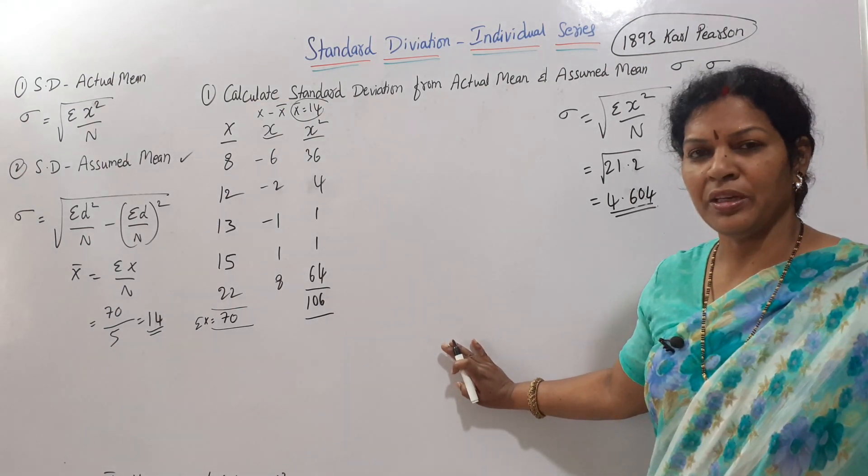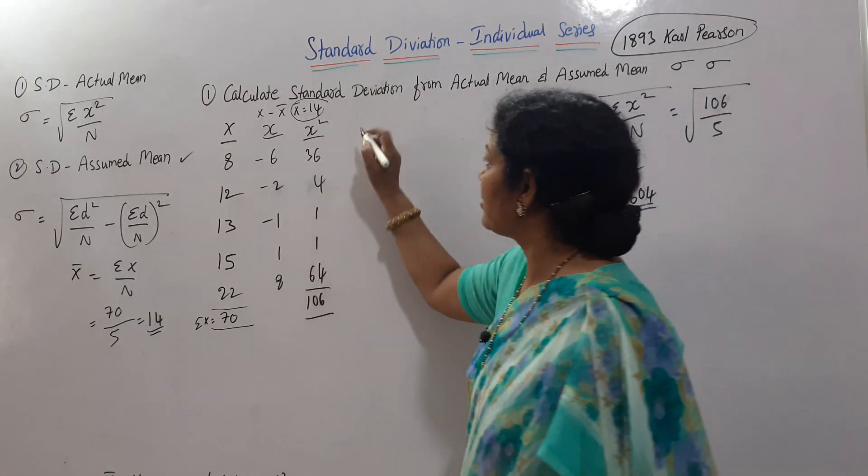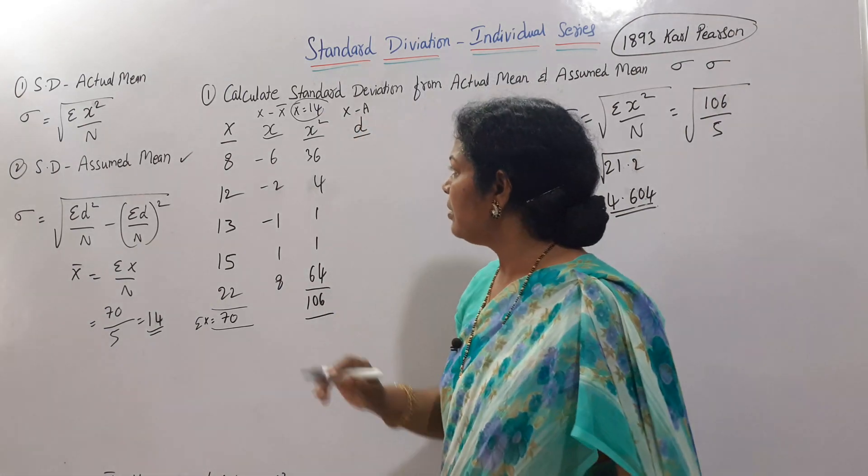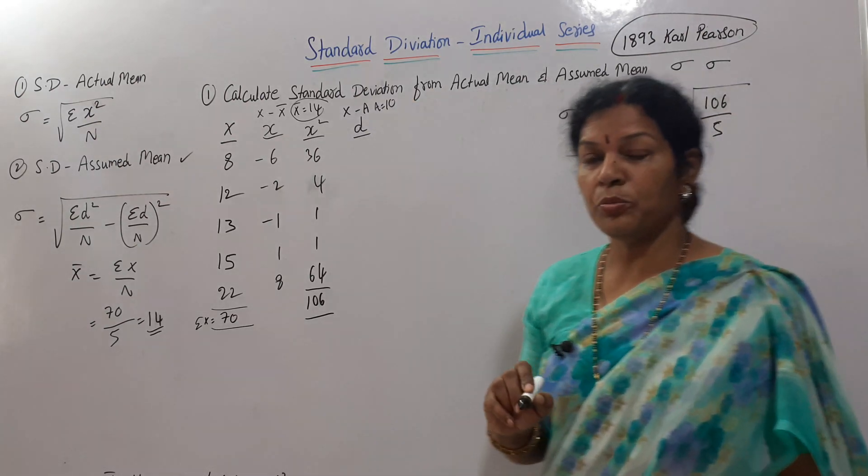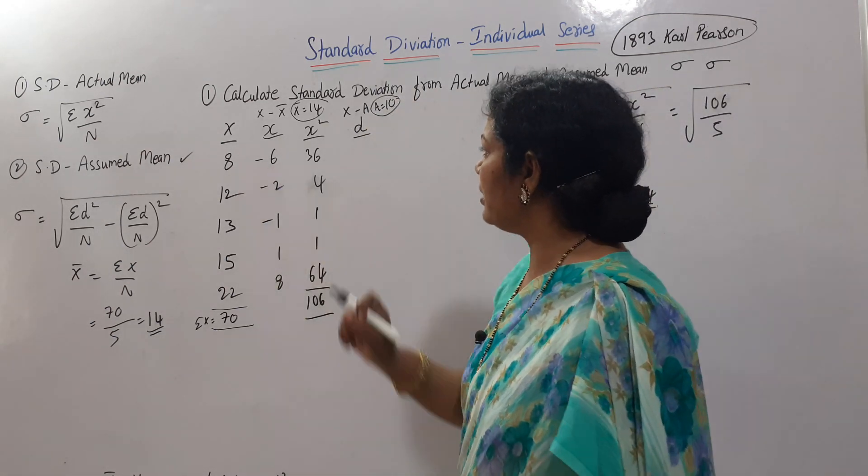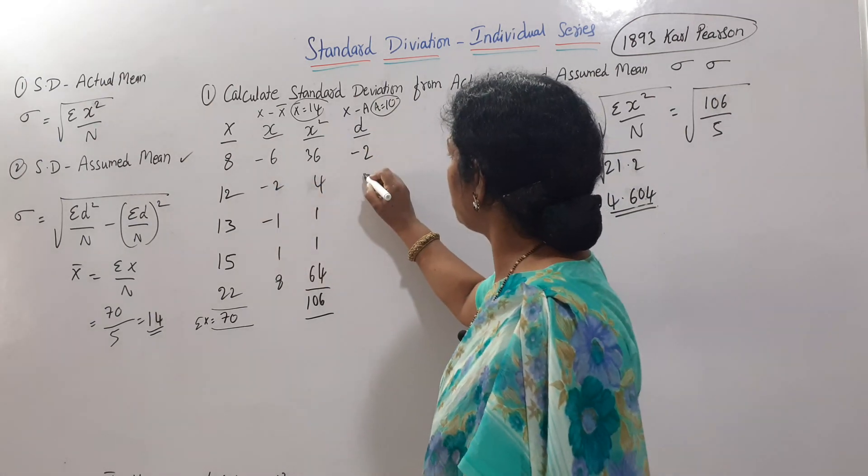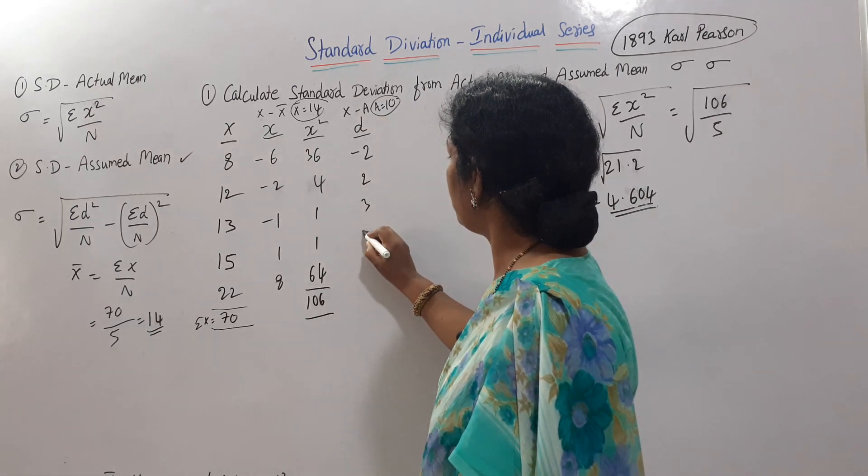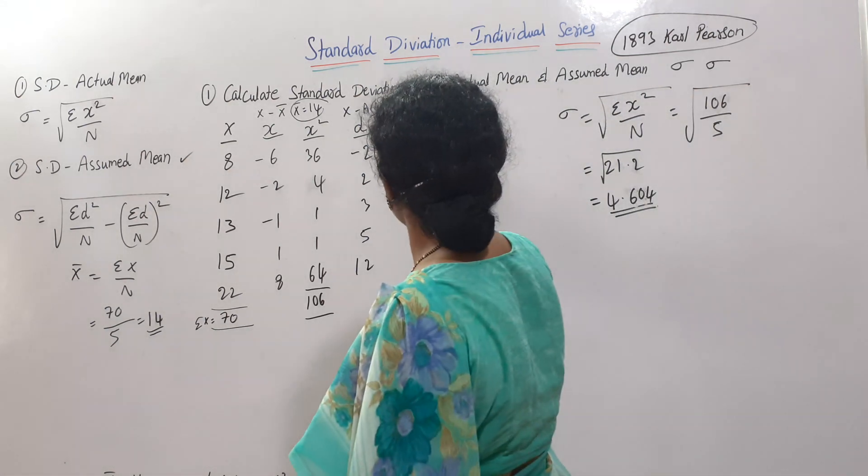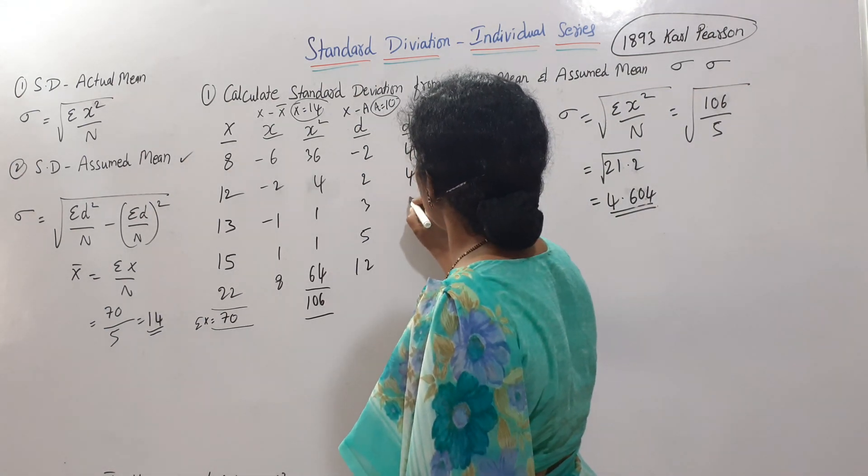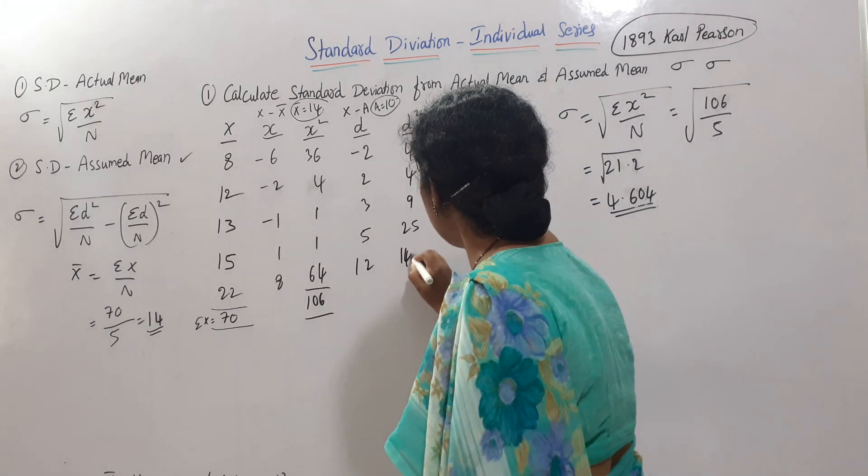Now coming to assumed mean. For assumed mean, the formula uses d. d means taking deviations from x, x minus a, assumed mean. I'm taking a as 10. x minus a: 8 minus 10 = -2, then 2, 3, 5, and 12. We need d square: 4, 4, 9, 25, and 144.